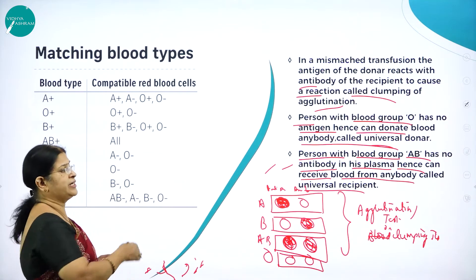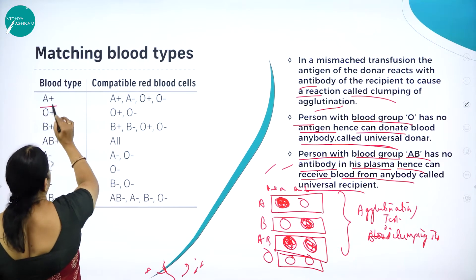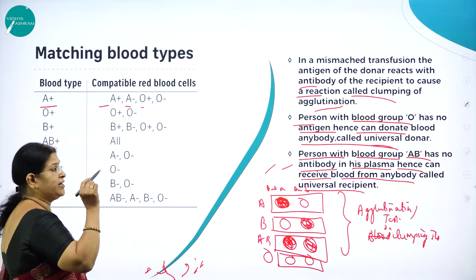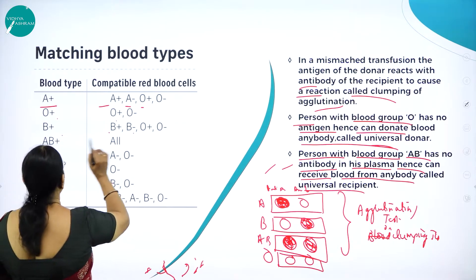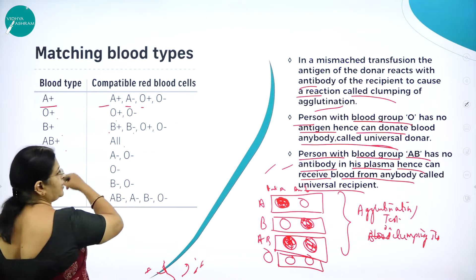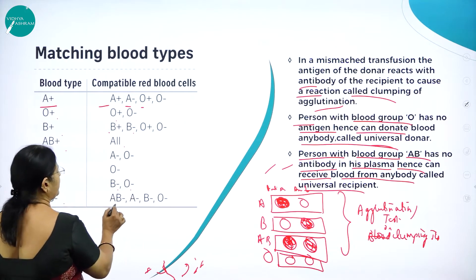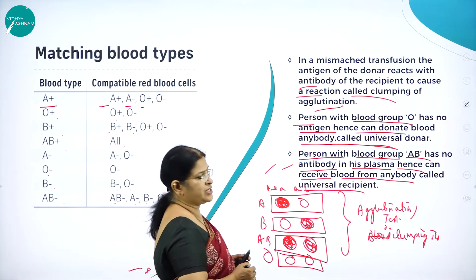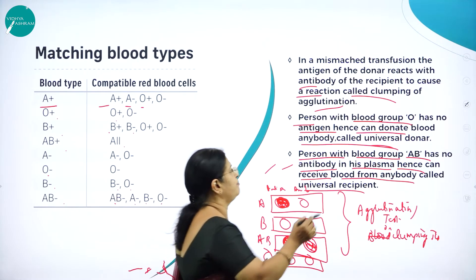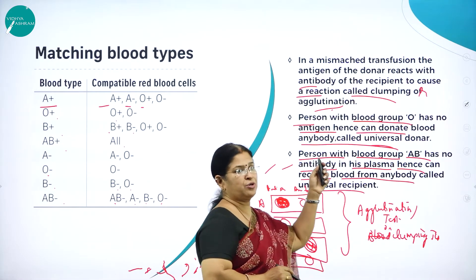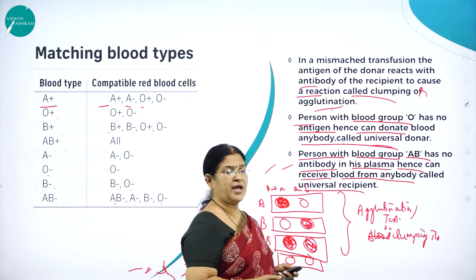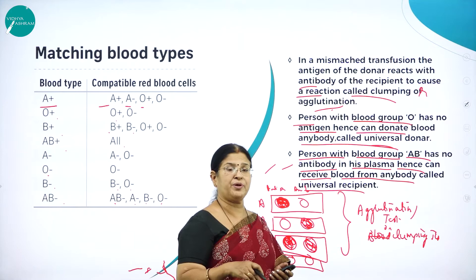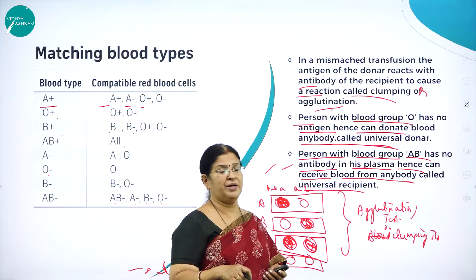A matching blood type table shows: blood type A can give for A and AB, and can receive from O and A. Blood type B can give for B and AB, and receive from O and B. AB can give only to AB but can receive from all groups. O can give to all groups but can only receive from O. Hence O is called the universal donor and AB is called the universal recipient.